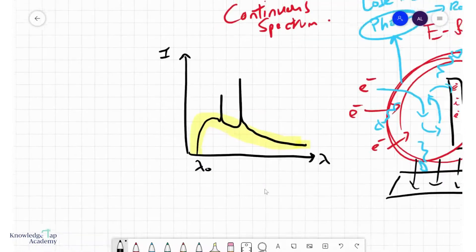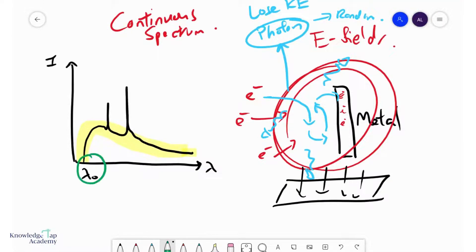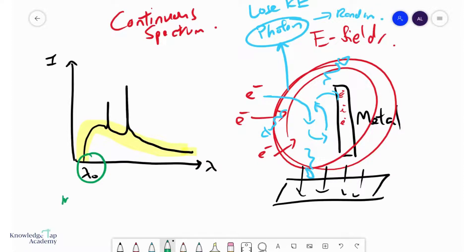Now, something else that is also very striking is the fact that there is a sudden cutoff over here. And so we call this the minimum wavelength. And so we just have to understand that there is some upper bound on the energy of this photon that can be released.